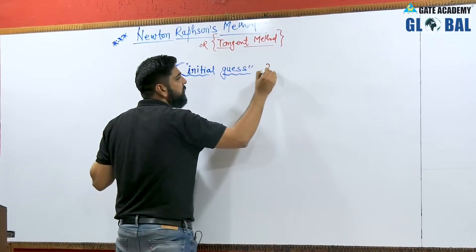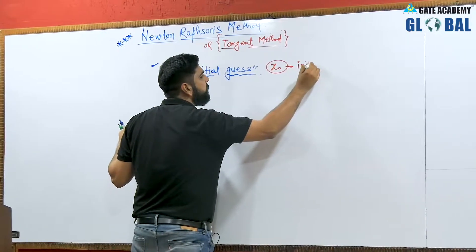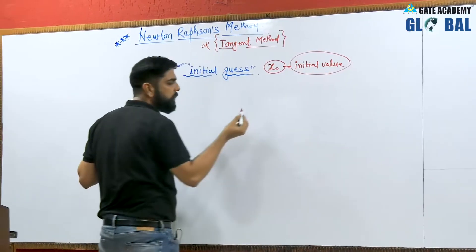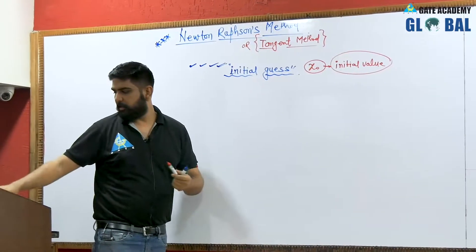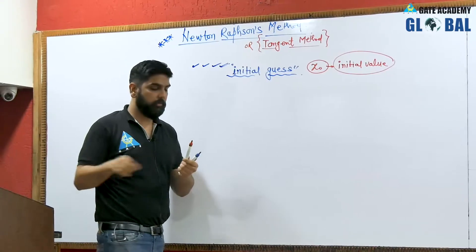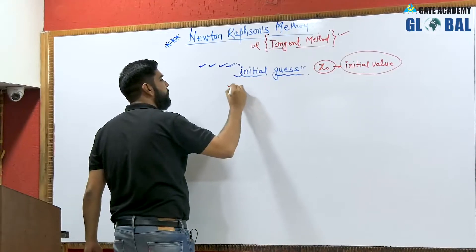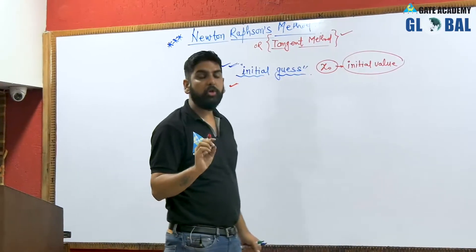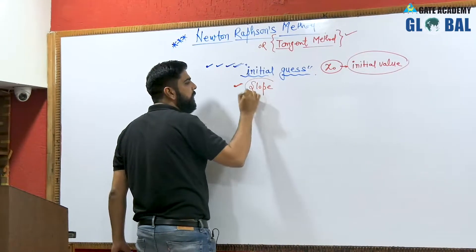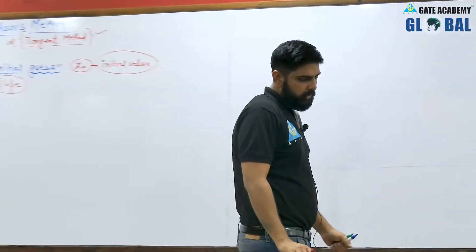The initial guess is also referred to as the initial value. The Newton-Raphson method is very sensitive about the initial guess or initial value. Graphically, it is also referred to as the tangent method or slope method.